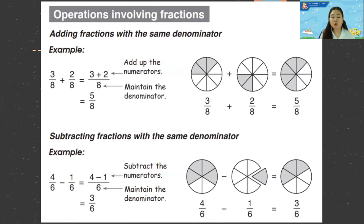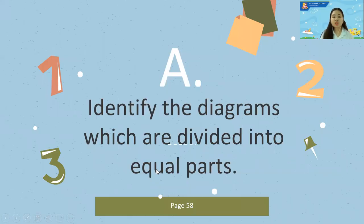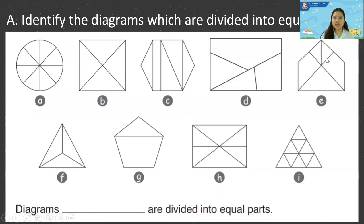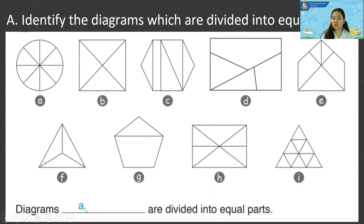Open your books on page 58. We have to identify the diagrams which are divided into equal parts. Letter A — it is a circle. Is it equal? Yes, that is equal, so write letter A. How about letter B? Is it equal?